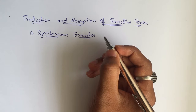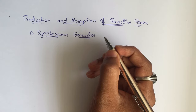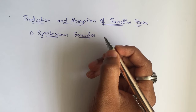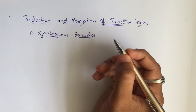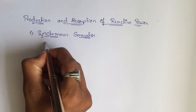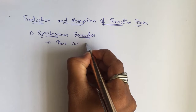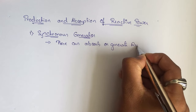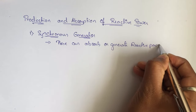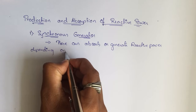A synchronous generator can absorb or generate reactive power. It is not just going to generate reactive power — it may also absorb reactive power. This is purely dependent on the excitation. How we excite the generator leads to absorption or generation. These can absorb or generate reactive power depending on the excitation.